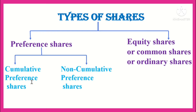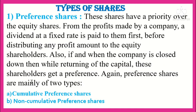Next is types of shares. There are two types: preference shares and equity shares. In preference shares, these shares have more priority over equity shares. From the profit made by a company, a dividend at a fixed rate is paid to preference shareholders first, before distributing any profit to equity shareholders.